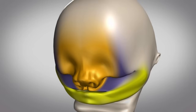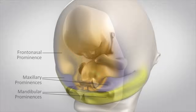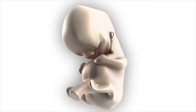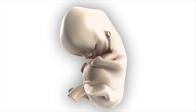In this flurry of activity in the first seven weeks after fertilization, the five facial prominences give rise to the formation of the forehead and sides of the face, middle and sides of the nose, the philtrum, the upper lip, the palate, and the lower jaw. By the seventh week of human embryonic development, most of the facial structures can be observed.